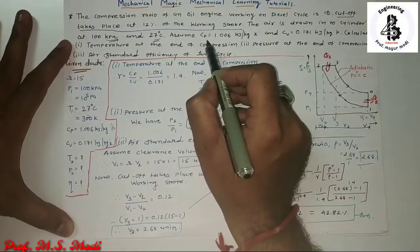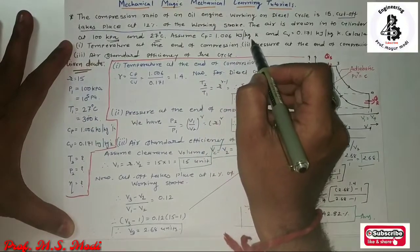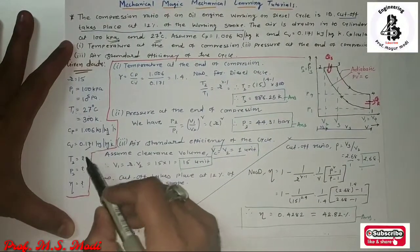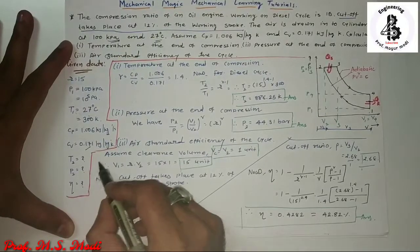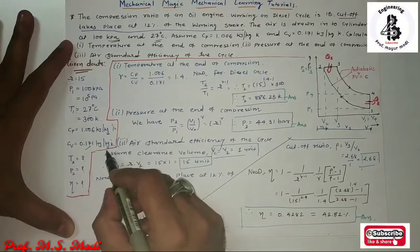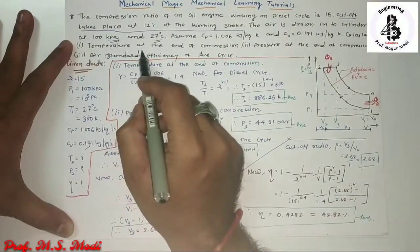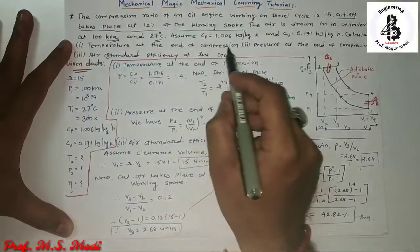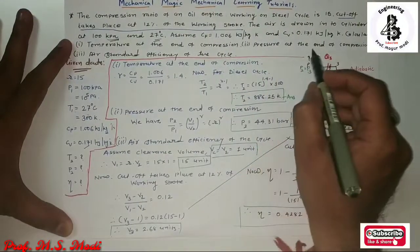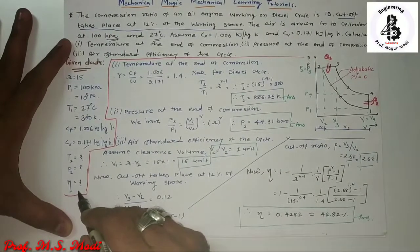Two more data values are given: Cp is 1.006 kJ per kg Kelvin, and Cv is 0.171 kJ per kg Kelvin. We need to find the temperature at the end of compression T2, the pressure at the end of compression P2, and the air standard efficiency of the cycle.